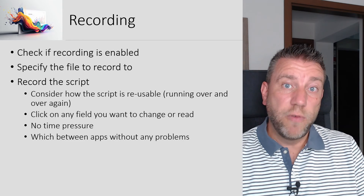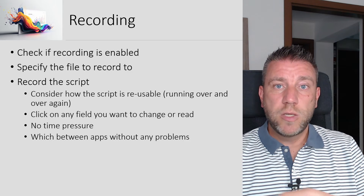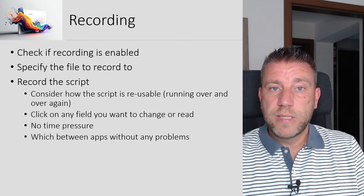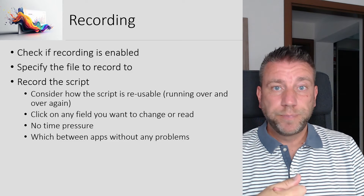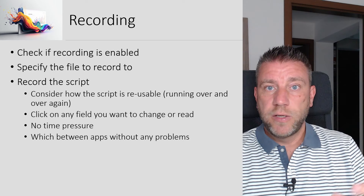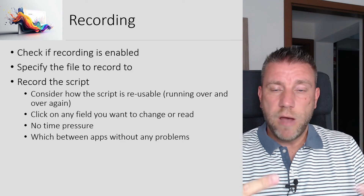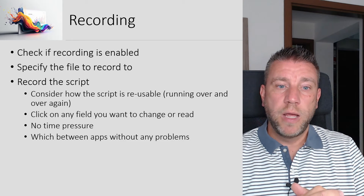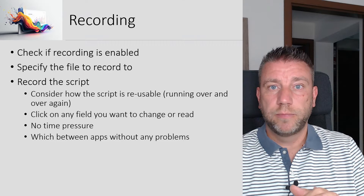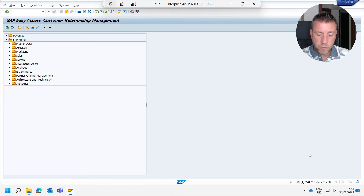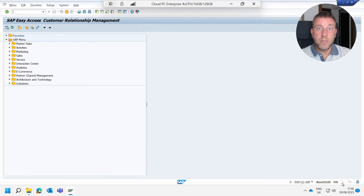Now let's look at how you actually create a recording in SAP GUI scripting. I'm going to do a very simple SE16 table selection — load a table, set a filter, and execute it. Before I start recording, I want to show you the basic check to see whether scripting is enabled. If you look at the status bar in your SAP GUI and hover your mouse over it, it shows 'SAP GUI Scripting — scripting is not running,' meaning scripting is enabled but no script is currently running. If scripting is not enabled, the icon appears grayed out.